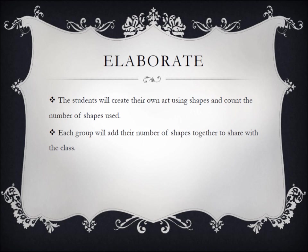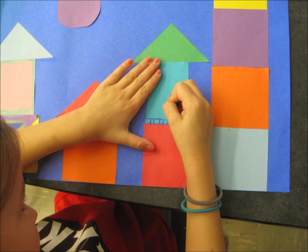For the elaboration part of my lesson, I told the students that now that I have shown you my art that I created using shapes, it's now your turn to create your own piece of art using shapes. Each group will get papers that have many shapes on it and you will use those shapes to create your artwork. You can use as many shapes as you want. I also told them that your art cannot look like your neighbor's because I want to see your creativity and I want to see what you can do.